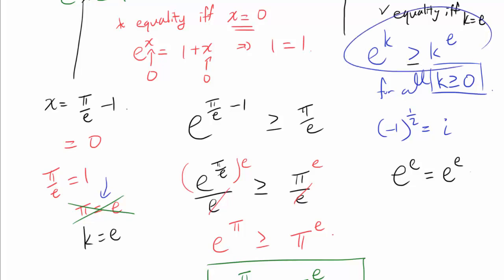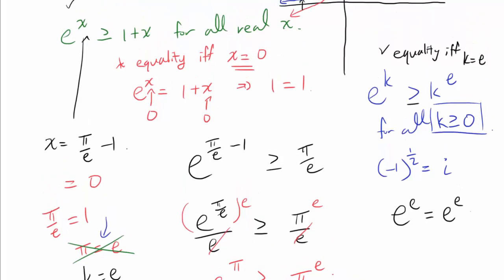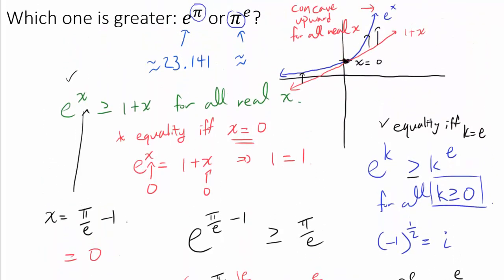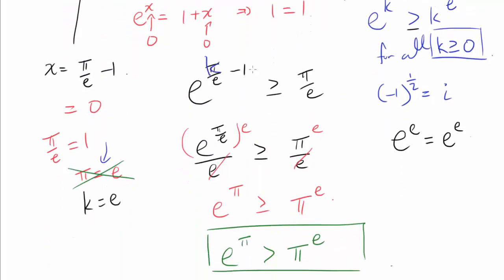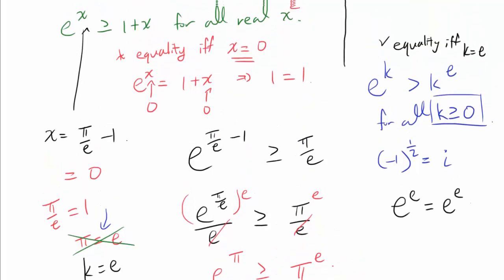So how do we prove this? How do we show that e to the k is always greater than k to the e, except when k is e? Well, we are going to do exactly the same thing. Instead of pi, we are just going to use k. So we have k. And when you raise it to e power, we are going to get e to the k is greater than or equal to k to the e. And of course, we are going to have equality if and only if k is equal to e. So you can just replace pi by any other non-negative number and repeat the same proof.